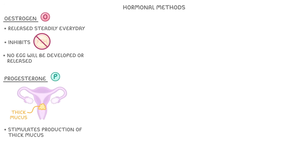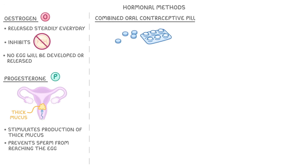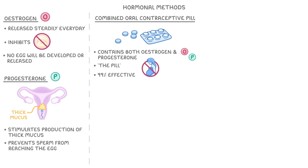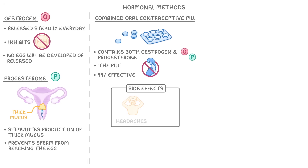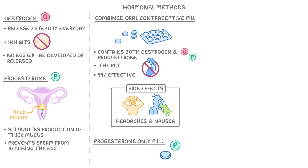Meanwhile, progesterone stimulates the production of thick mucus in the cervix, which remember is the entrance to the uterus, and so prevents the sperm from ever reaching the egg. One of the most common contraceptives is the combined oral contraceptive pill, which contains a combination of both oestrogen and progesterone, and is often just called the pill. It's over 99% effective at preventing pregnancy, as long as the pills are taken properly, but it can sometimes have side effects such as headaches or nausea. There's also a progesterone-only pill, which is just as effective but tends to have fewer side effects.